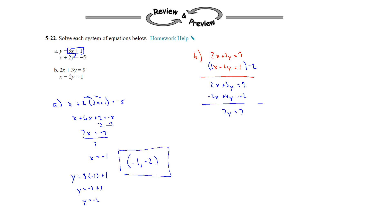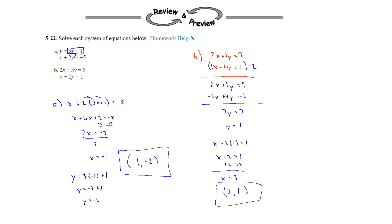So 7y is equal to 7. Dividing by 7 gives y equal to 1. We plug that back into one of the two equations — I plugged it into the second one — and we get x minus 2, then add 2 to both sides, so x equals 3. Our solution is 3 comma 1. That's practice on solving systems of equations: the first case we used substitution, the second case we used elimination.